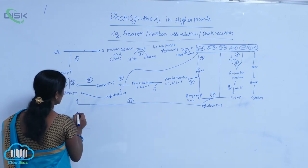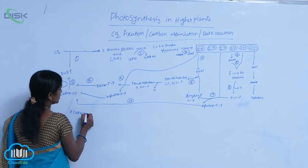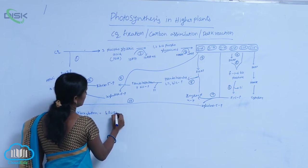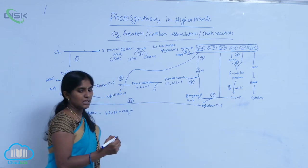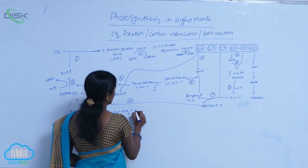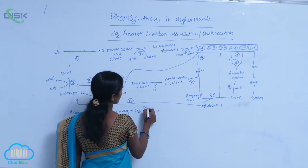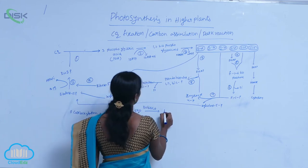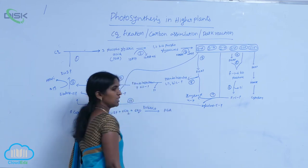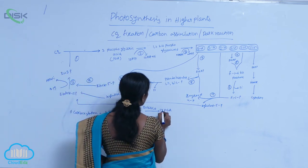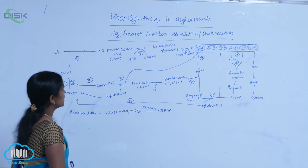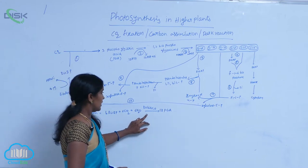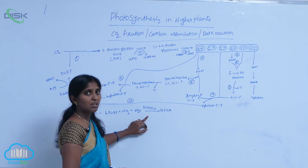Here, you see the carboxylation reaction. First is carboxylation reaction. Here, 6 RUBP plus 6 CO2 plus 6 water molecules in the presence of enzyme RUBISCO. RUBISCO, it produced as PGA. How many PGA molecules? 12 PGA molecules are produced. Phosphoglyceric acid molecules are produced, mediated by the enzyme that is RUBISCO.